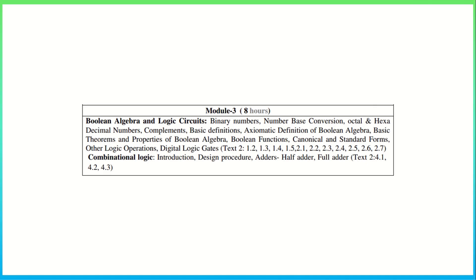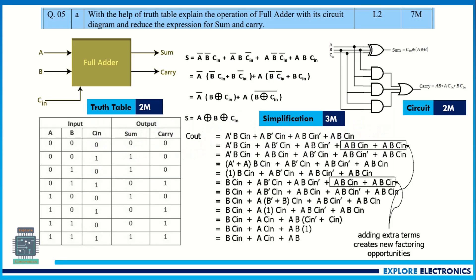The first question in the model question paper is on the full adder: explain the operation of a full adder with its truth table and circuit diagram, and reduce the expression for sum and carry. You need to carefully look at the question — they have asked to explain the full adder with the truth table and the logical diagram, and also to reduce the expression. This carries seven marks; otherwise this question is asked for four to five marks.